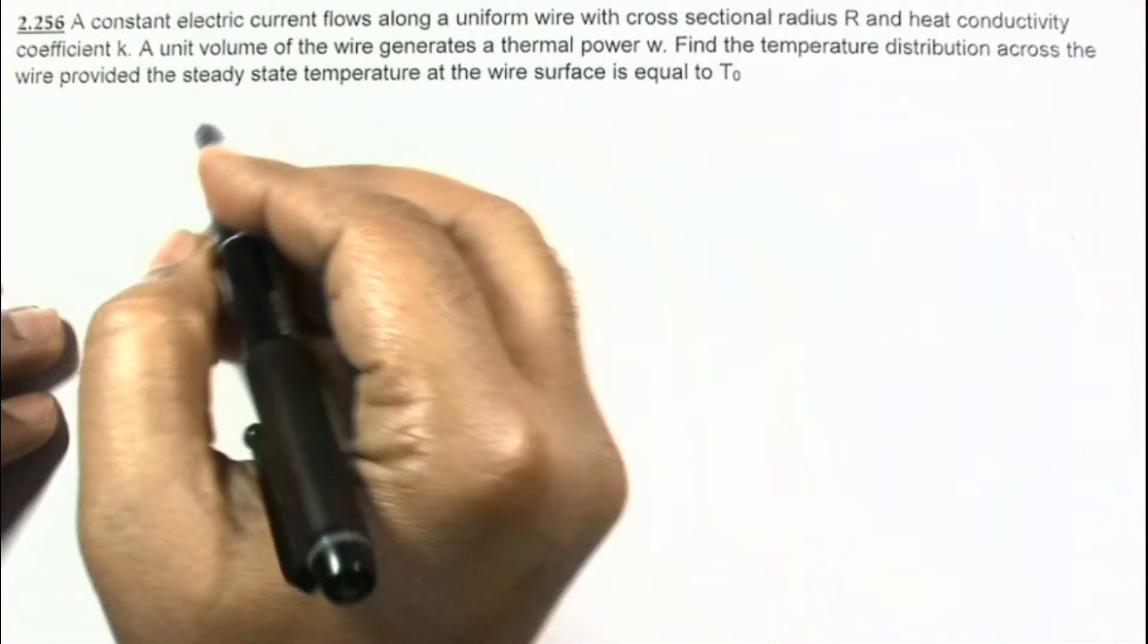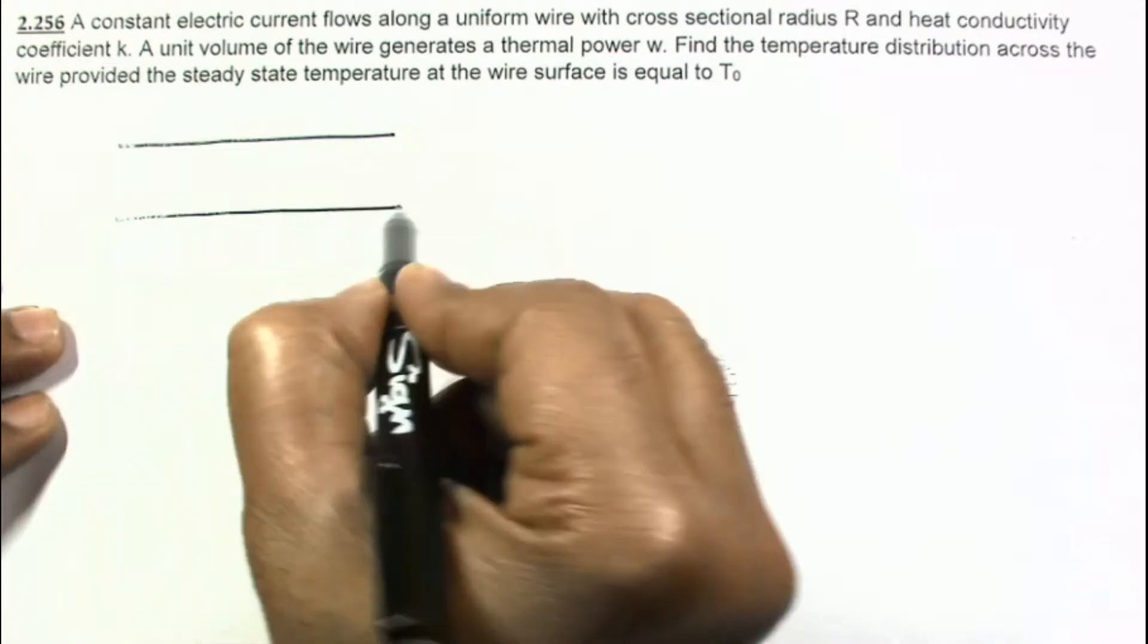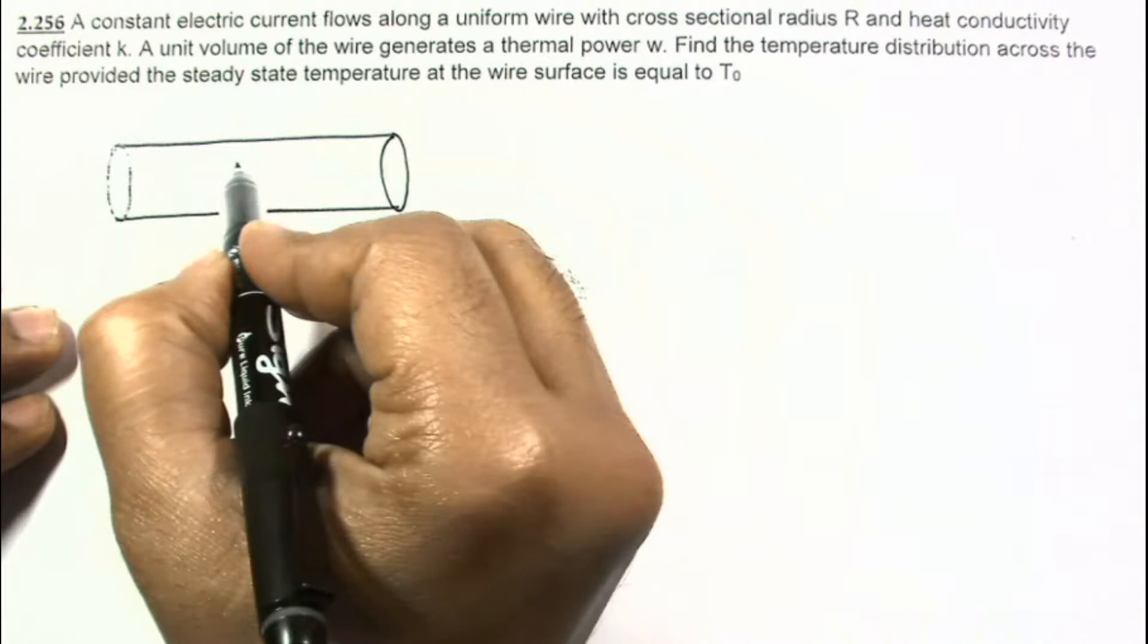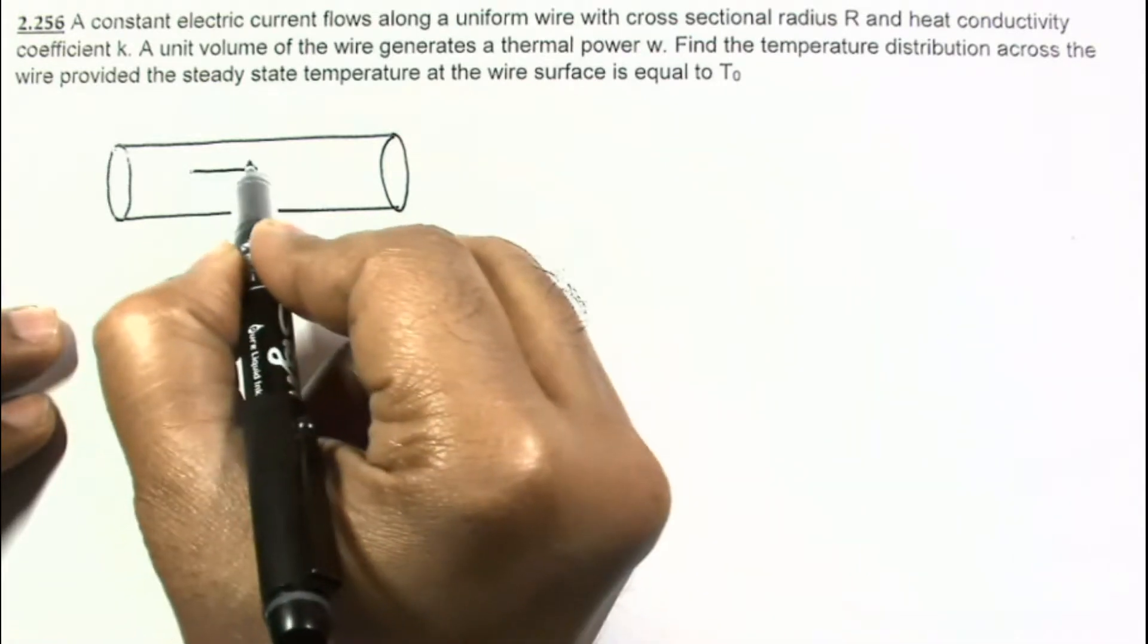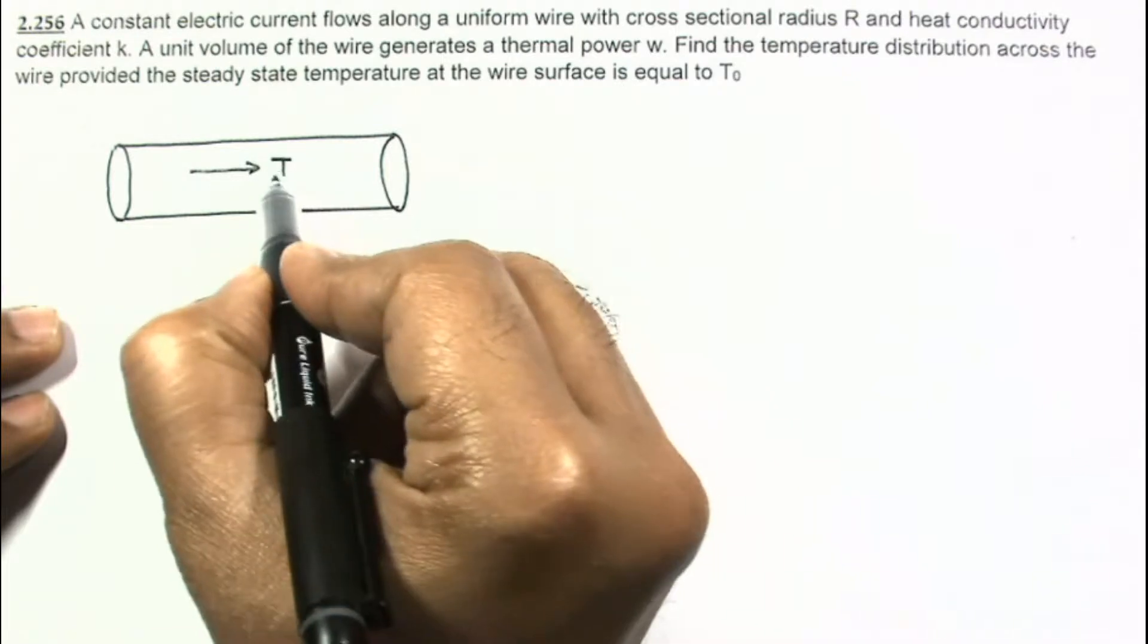Let us make the diagram. Suppose this is a cylindrical wire. In this cylindrical wire, it is given that a constant current is flowing like this. This is electric current. Let us say electric current is I.